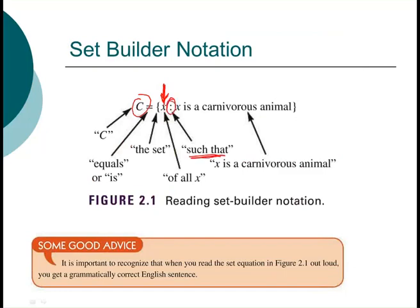X is a carnivorous animal, or it could say set C, or something else. Let's call it B. Set B is the set of Y such that all Y's are bigger than zero. In other words, this would be all of our positive rational numbers.